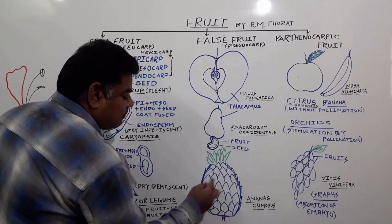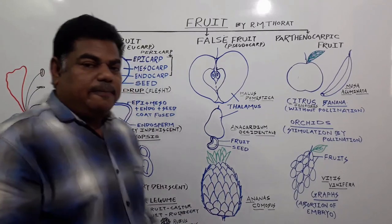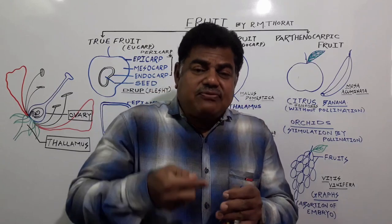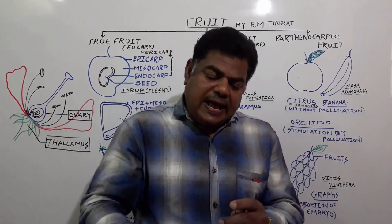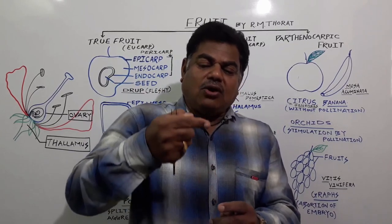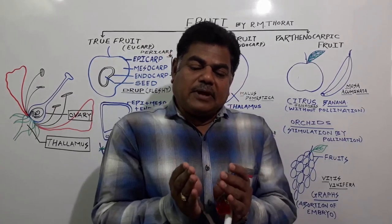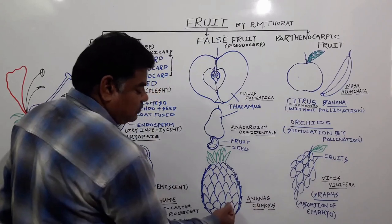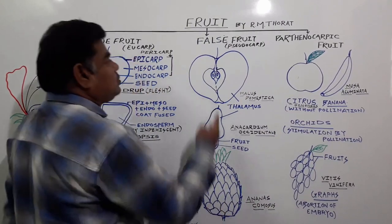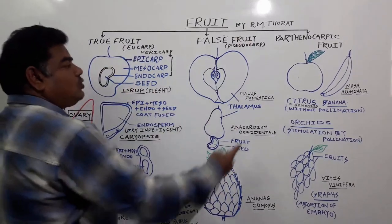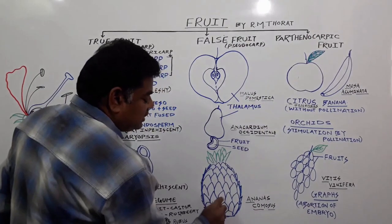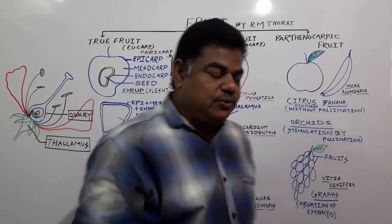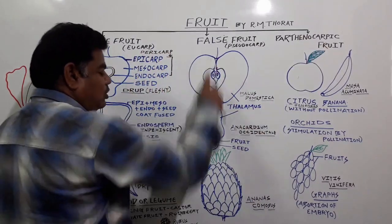Next example: in the case of Ananas — pineapple — many structures come close to each other to form a fruit-like structure. It is a complete inflorescence — many flowers present on one floral axis — and many flowers combine to form one fruit. Such a fruit in the case of pineapple is also known as a false fruit, and it is also called a parthenocarpic fruit because in each structure seeds are totally absent.